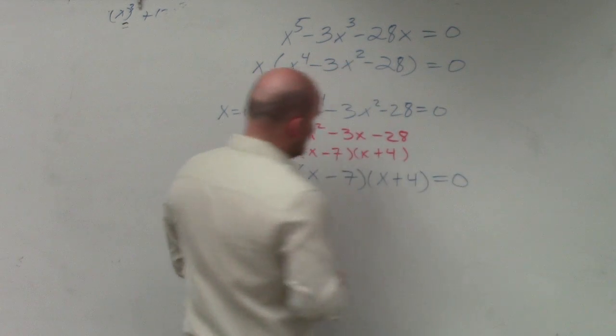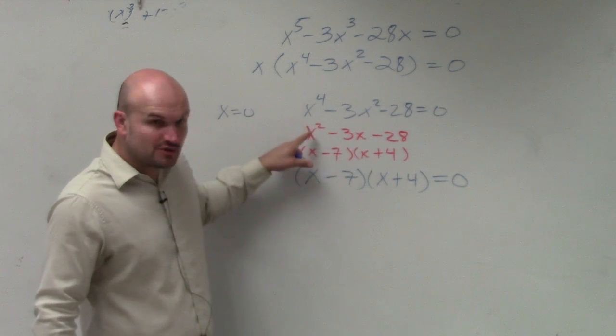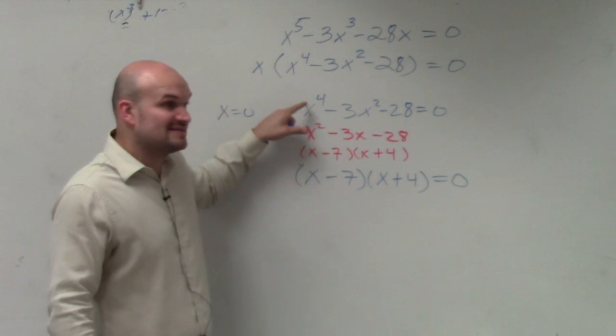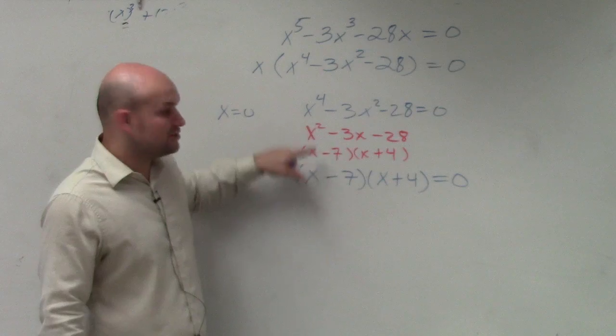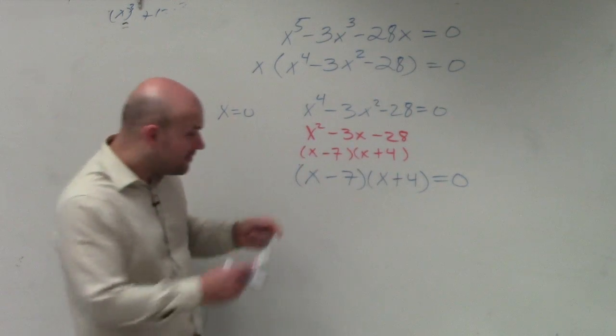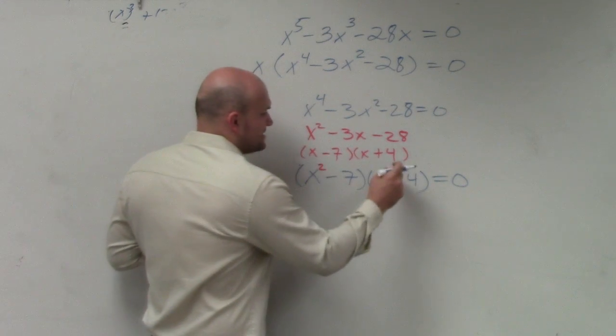However, the issue is x times x gives us x squared. We need x times x to give us x to the fourth. So what power should we have these to? Squared. So you put them to the second power.